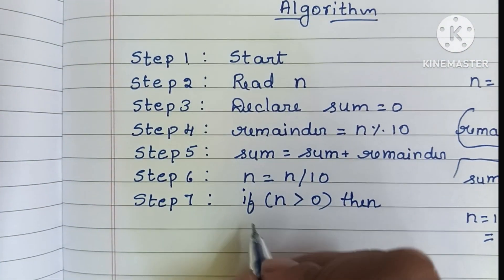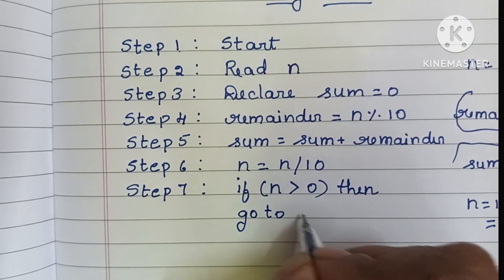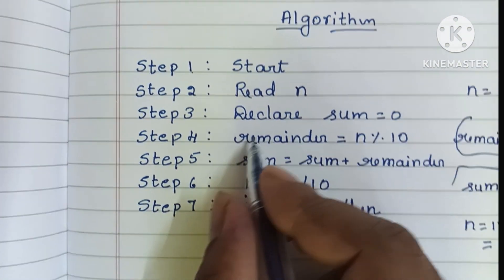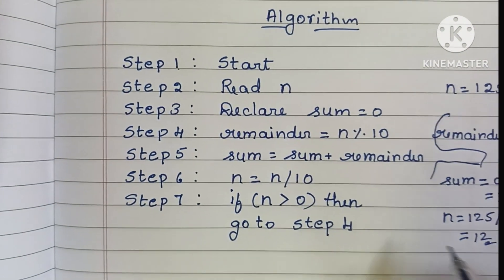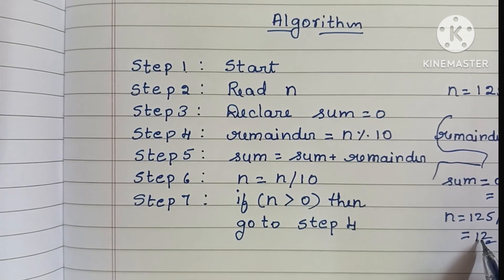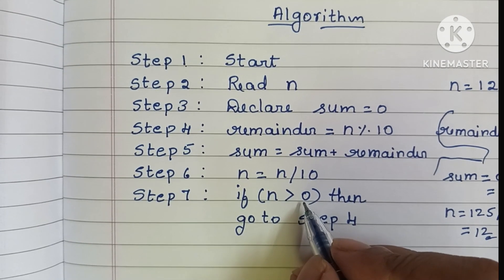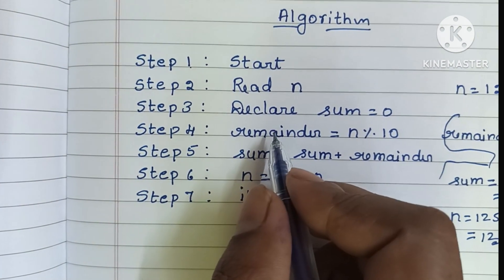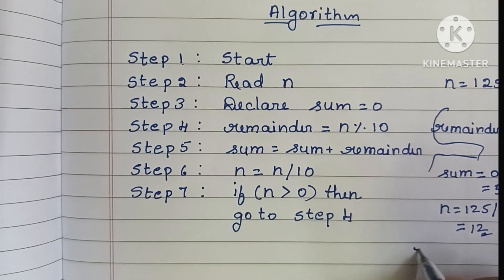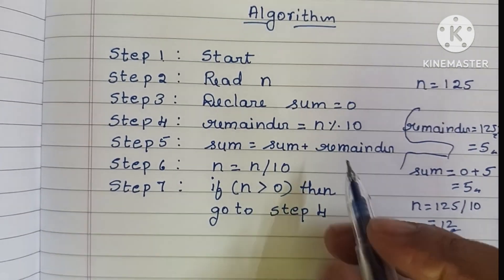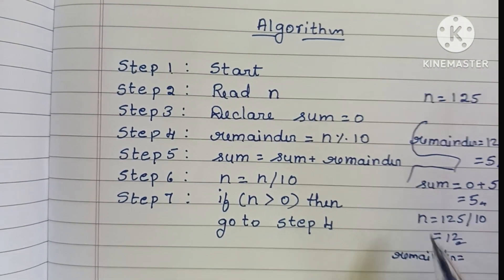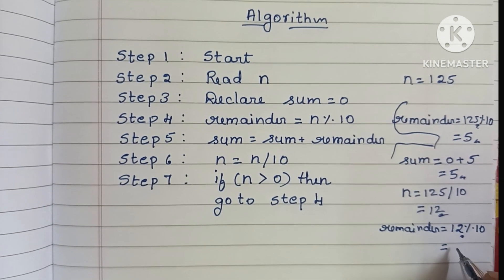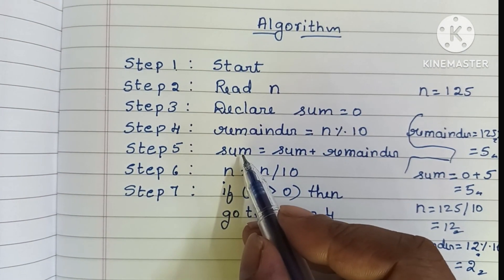We go back to step 4. If N is greater than 0, we execute the calculations again. N is 12, and 12 is greater than 0, so we go to step 4 again and compute the remainder: 12 mod 10 gives remainder equal to 2.